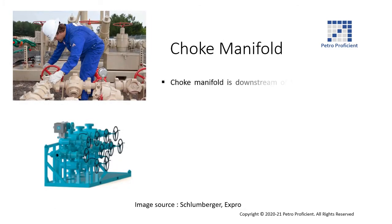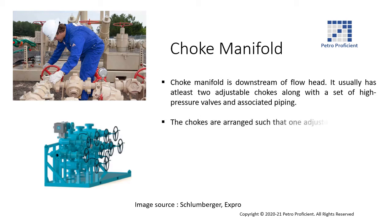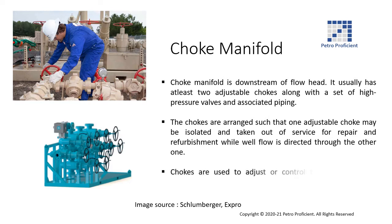The choke manifold is installed downstream of the flow head. It usually has at least two adjustable chokes along with a set of high pressure valves and associated piping. The chokes are arranged such that one adjustable choke may be isolated and taken out of service for repair and refurbishment while well flow is directed through the other one. Chokes are used to adjust or control the fluid flow and downstream system pressure.